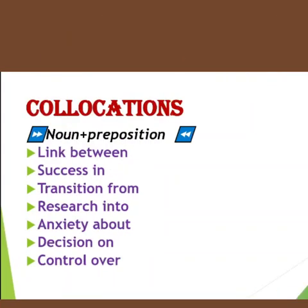Next collocation is noun plus preposition. The prepositions mostly used with nouns include: 'link between' — for example, 'the link between smoking and cancer is too strong to ignore'. When we talk about a link between two things, we always use 'between'. Then 'success in' — 'he made him successful in his profession'. 'Transition from', 'research into' — 'she does research into child psychology'. 'Decision on', 'anxiety about' — 'I am full of anxiety about the future'. 'Control over'. These noun plus preposition collocations are used according to the sentence and situation.